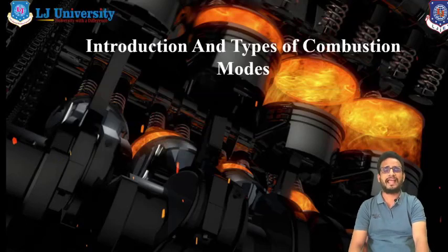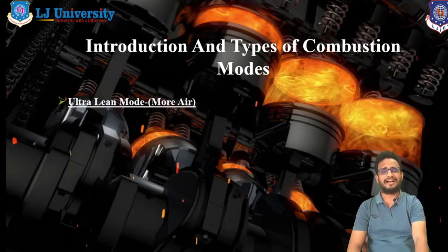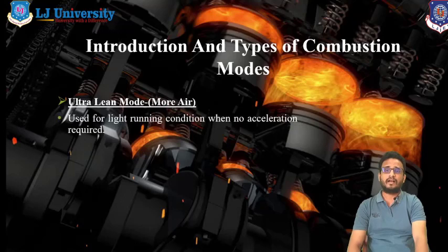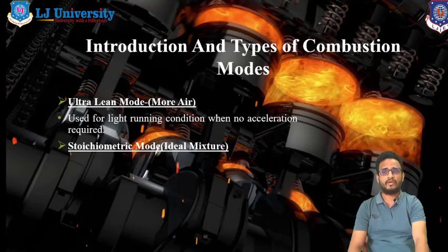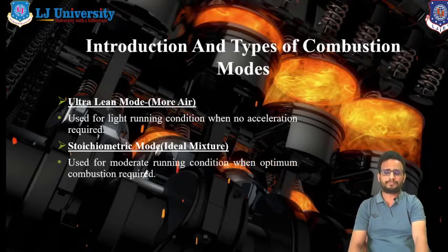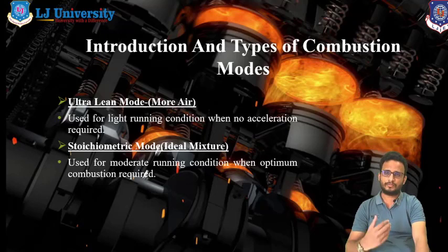Now let us discuss the types of combustion modes. The first is the ultra lean mode — as the name suggests, air is more compared to fuel. This type of mixture is used for high-speed running conditions where no acceleration is required. The second is the stoichiometric mode, which is the ideal mixture at 14.7:1 air-fuel ratio — the standard mixture for both SI and CI engines, used for moderate running conditions where optimum combustion is required.